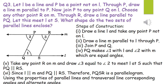Question number 3: Let L be a line and P be a point not on L. Through P, draw a line M parallel to L. Join P to any point Q on L, choose any other point R on M, through R draw a line parallel to PQ, and let this meet L at S. What shape do the two sets of parallel lines enclose? We draw line L, take point P not on L, then draw line M parallel to L through P. We take any point Q on L, join PQ, and draw two equal angles 1 and 2 on opposite sides of transversal PQ.